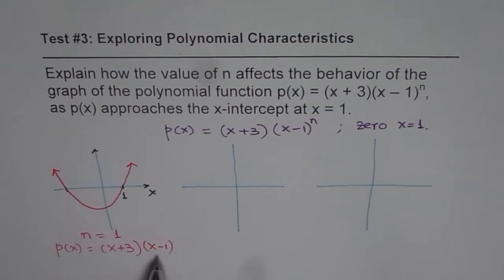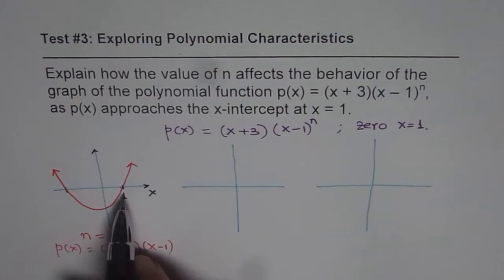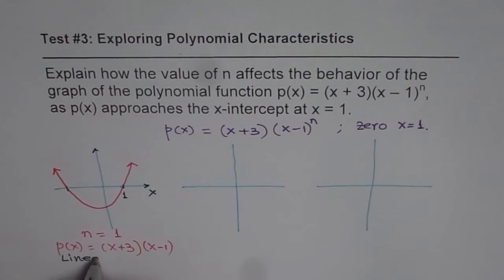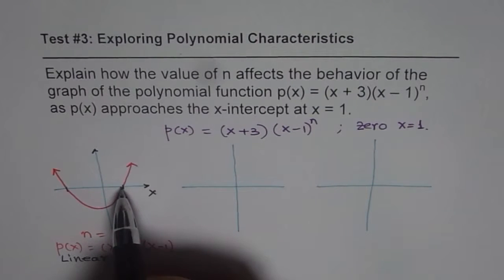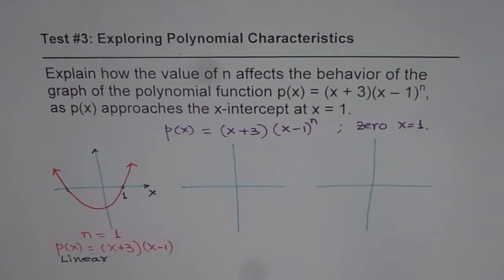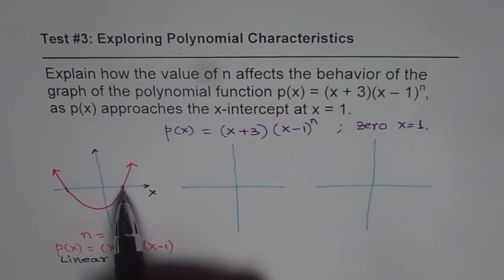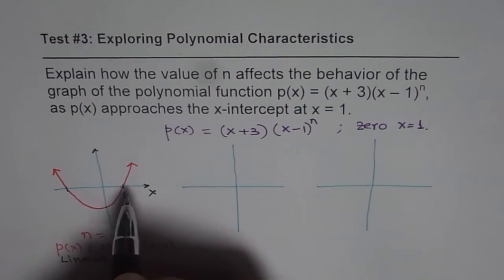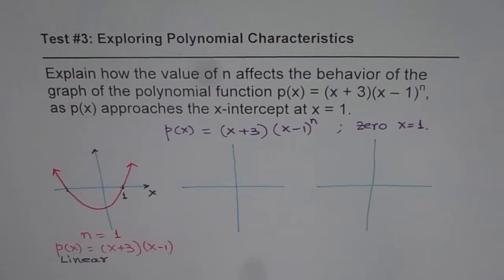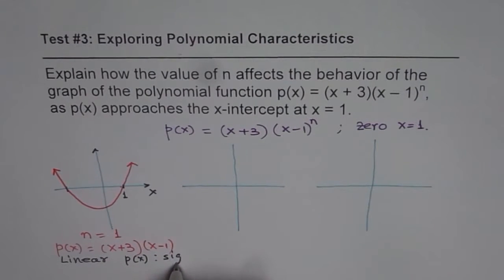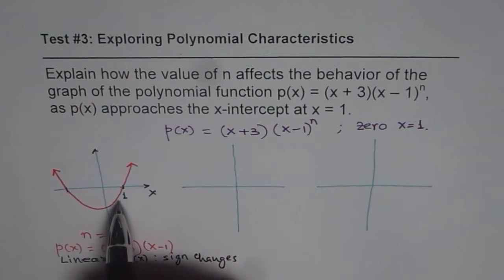In this case, since the degree is 1, the zero has order or multiplicity of 1, so it is linear in nature. The graph crosses the x-intercept like a line. The other thing to mention is that as it approaches the x-intercept value, f of x is negative just before, and just after the x-intercept it is positive. That means the polynomial p of x changes sign from negative to positive.